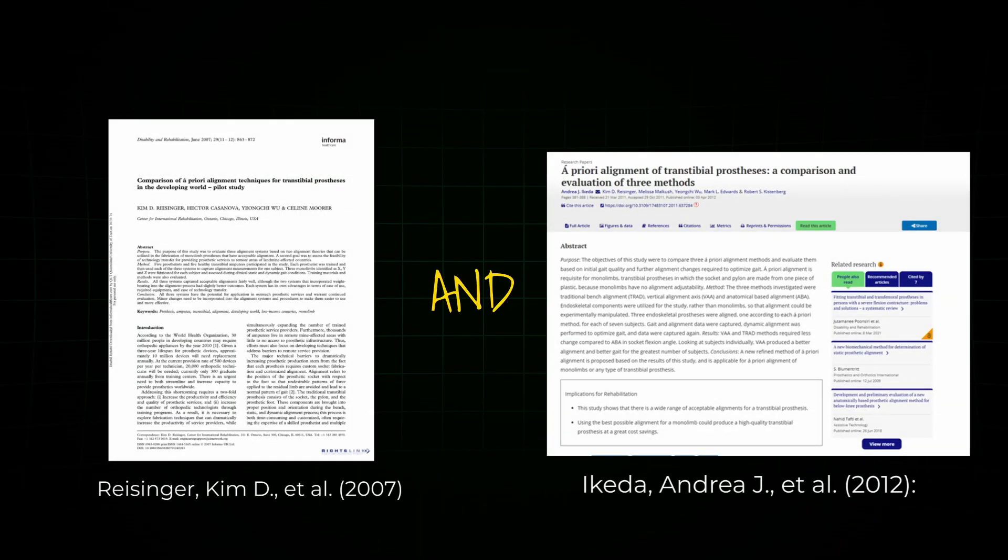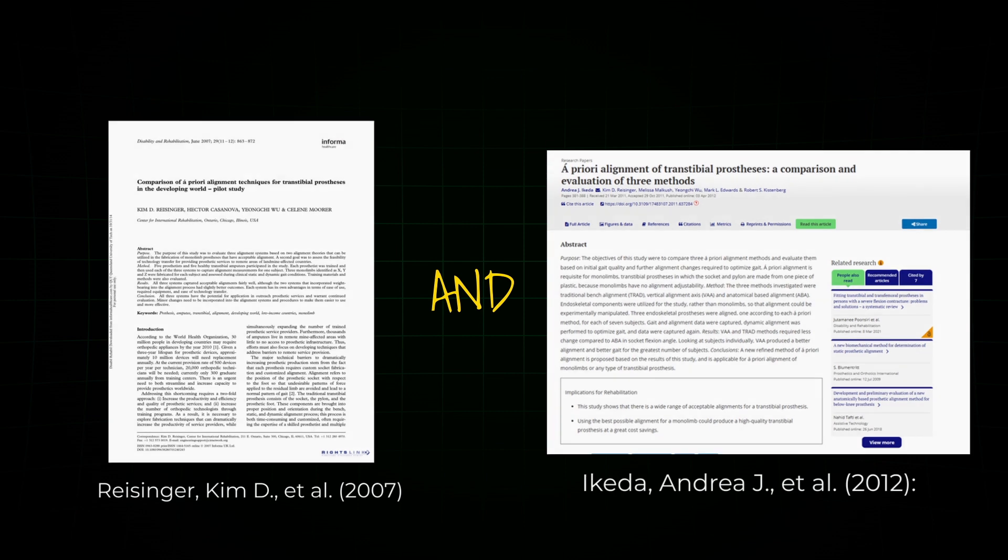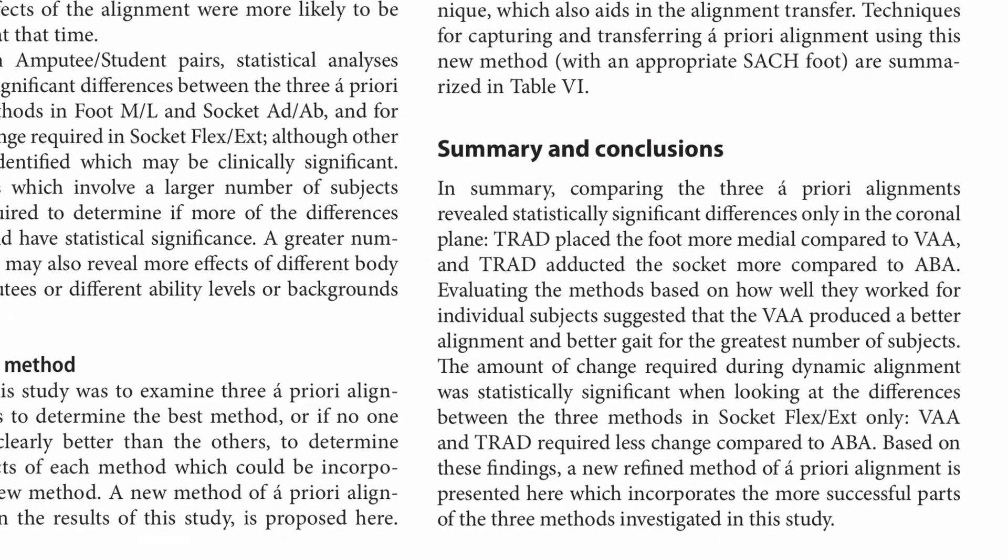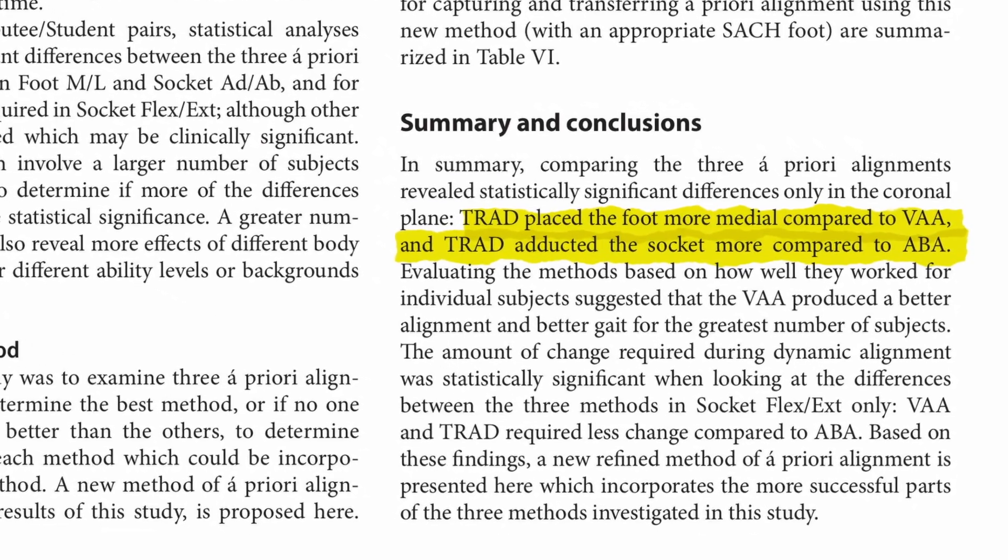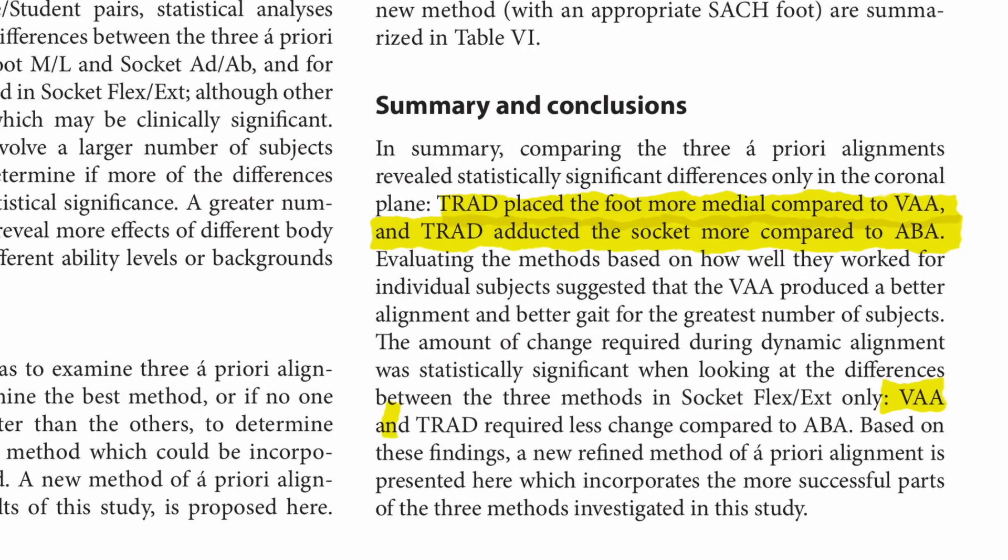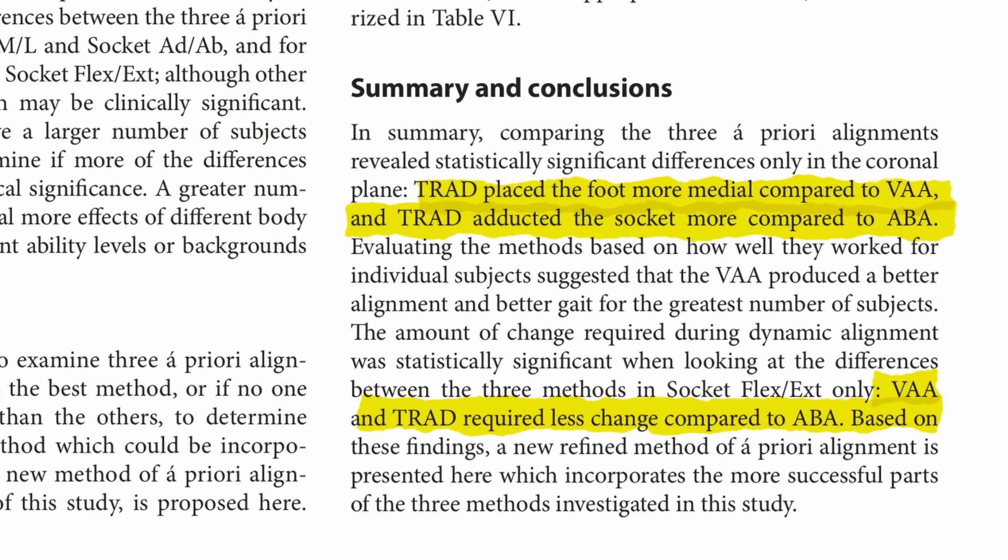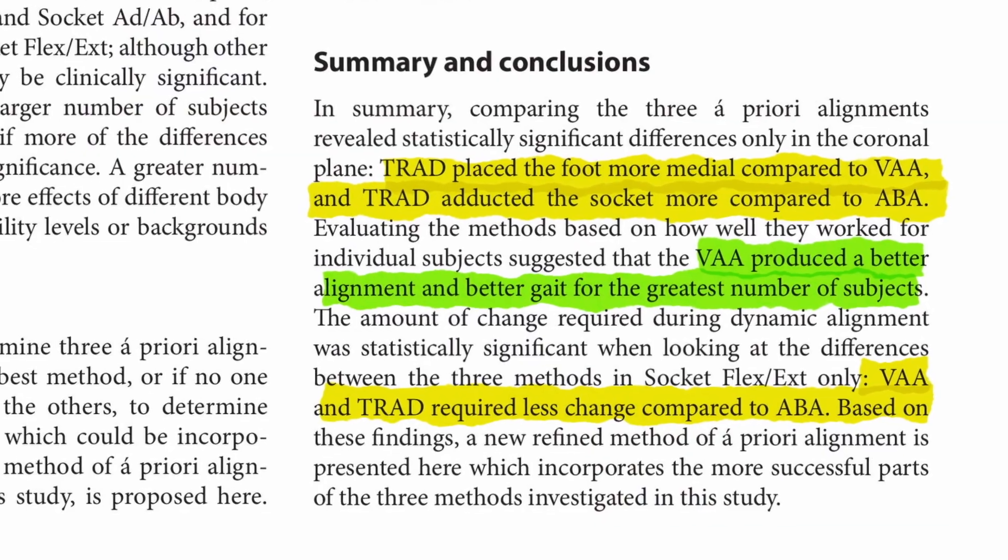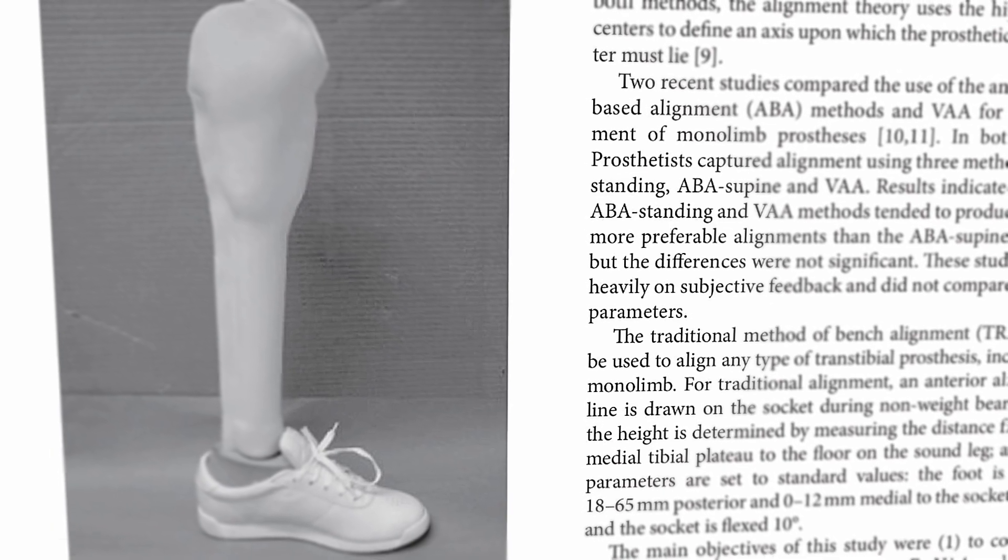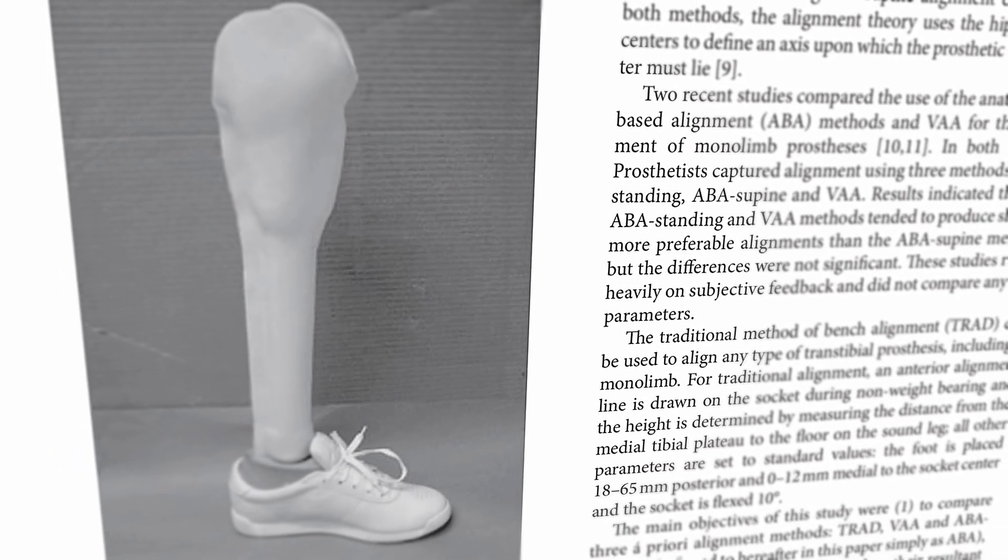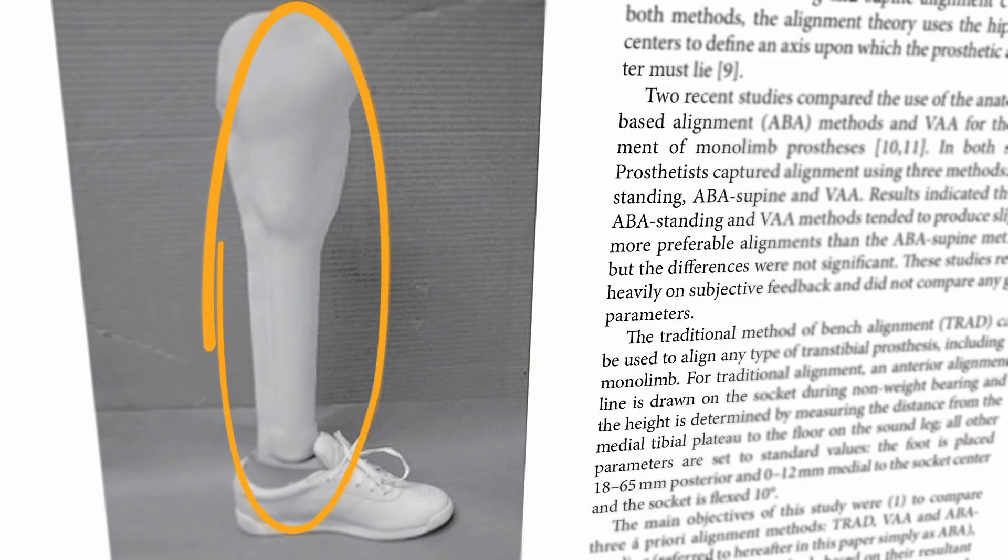So what is the best method? These studies tried to find out exactly that. Ikeda et al. recruited seven unilateral below-knee amputees on which all three alignment methods were tested. Reisinger et al. recruited five. The biggest difference was shown at the frontal alignment in which the traditional bench alignment and the ABA method needed the least amount of adjustments. But considering the wide range of patients and different experience levels, the VAA method needed overall the least amount of tweaking. This is very useful when you are building mono limb prosthetics, which are hard to tune after the fabrication.